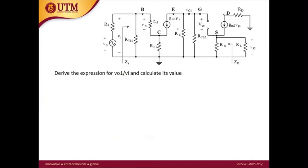This is the redrawn equivalent circuit. Note that I use a circle shape here, but the proper representation is a diamond shape for the dependent current source. The next question asks us to derive the expression for Vout1 over Vi. Vout1 equals minus Gm1·Vpi times (RC parallel with R3 parallel with R4), where Rth2 is R3 parallel R4.